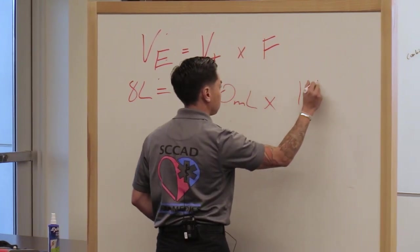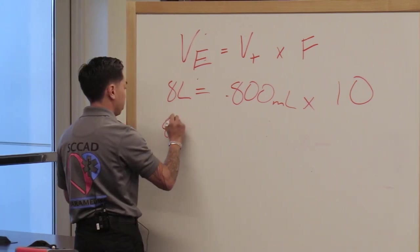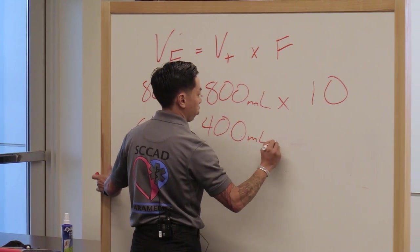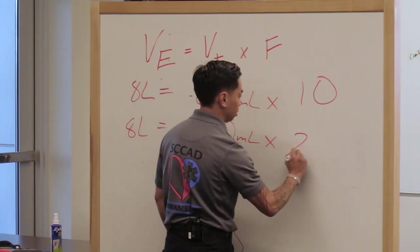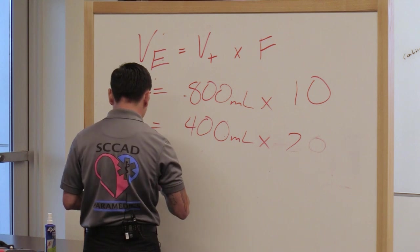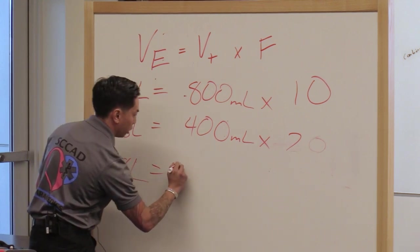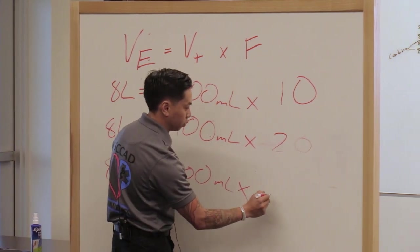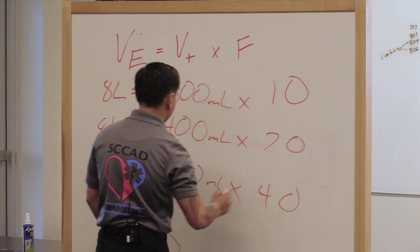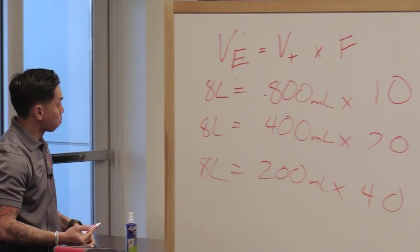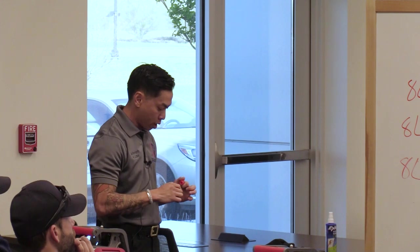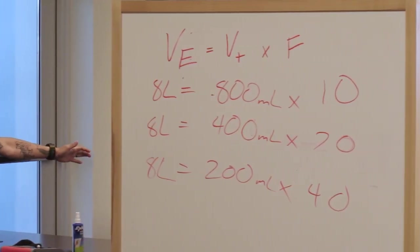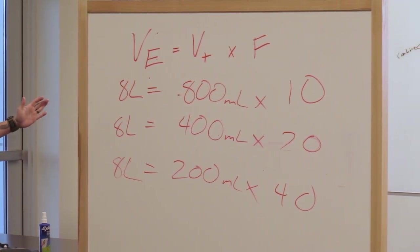So if I have to move 8 liters for my minute volume, and my tidal volume is 800 milliliters, what's the respiratory rate have to be? 10. 8 liters, tidal volume of 400. 20. 8 liters, tidal volume of 200. 40. If you had to pick the least wrong answer out of these three, which one would you pick?